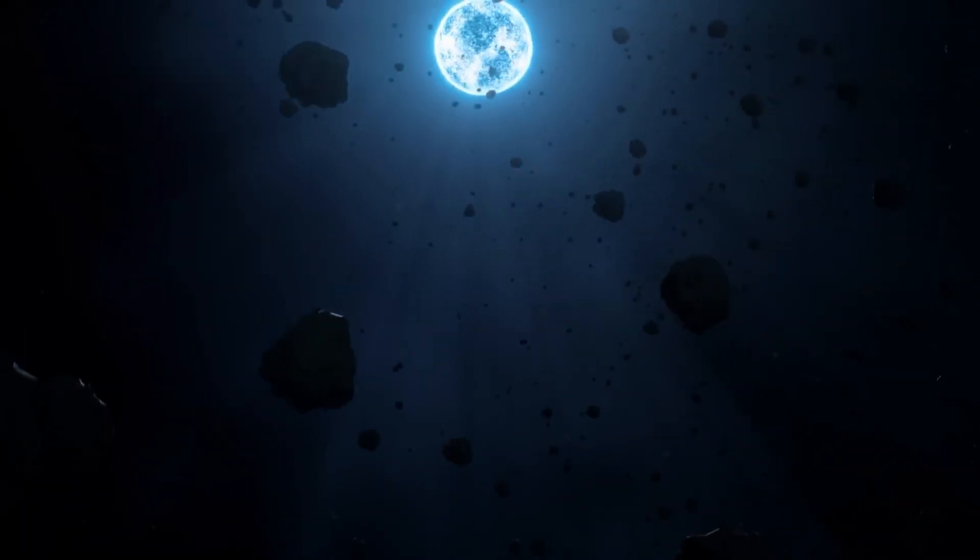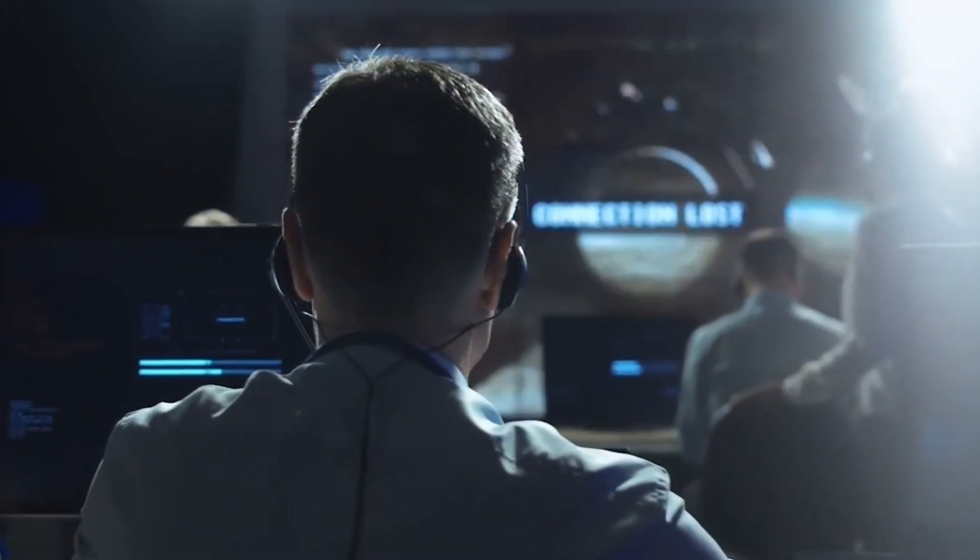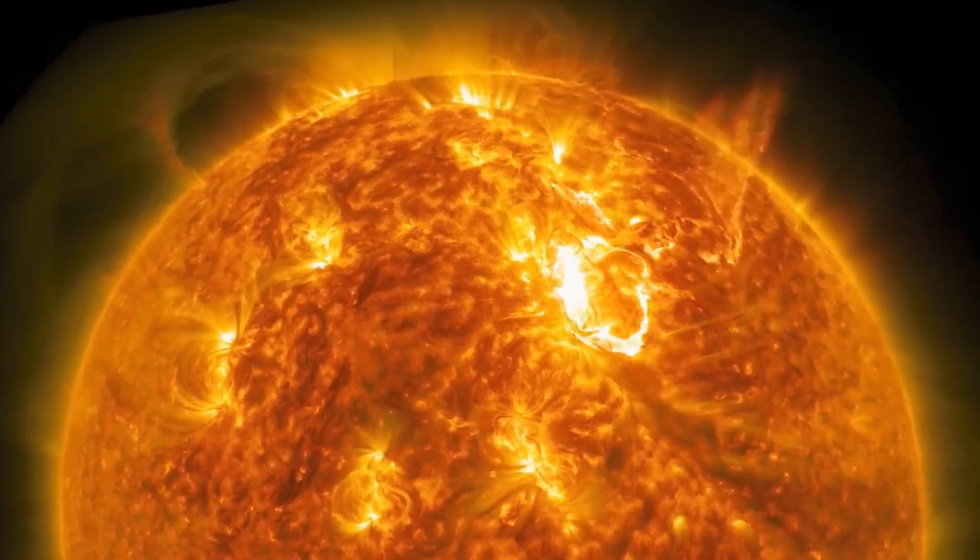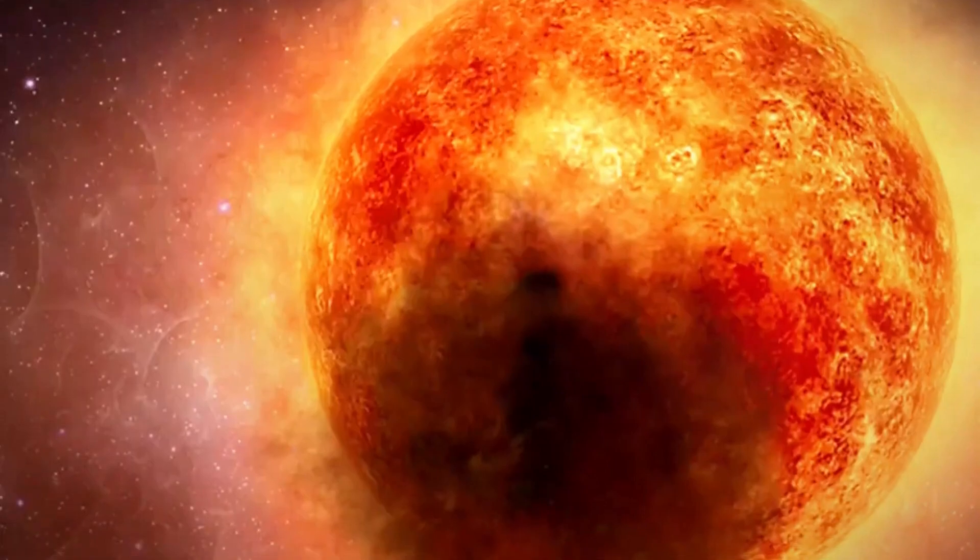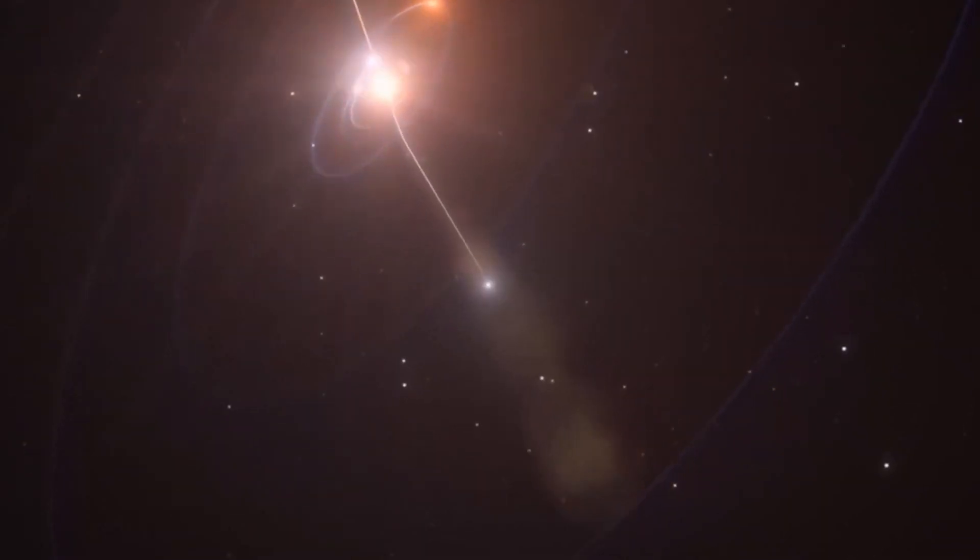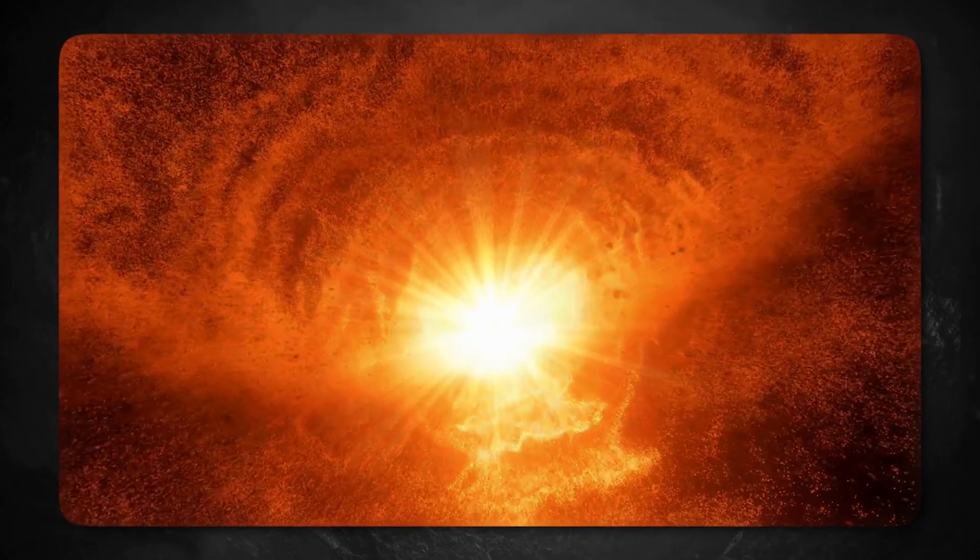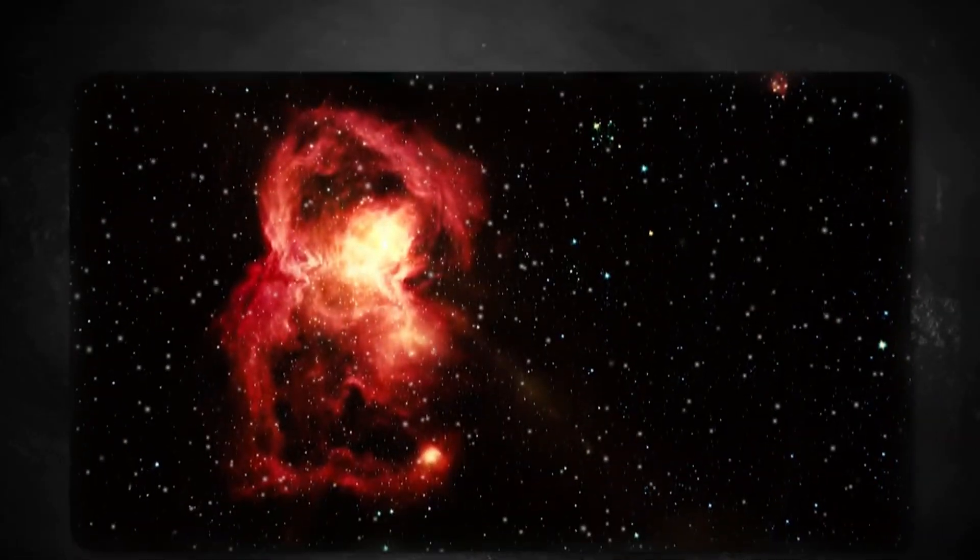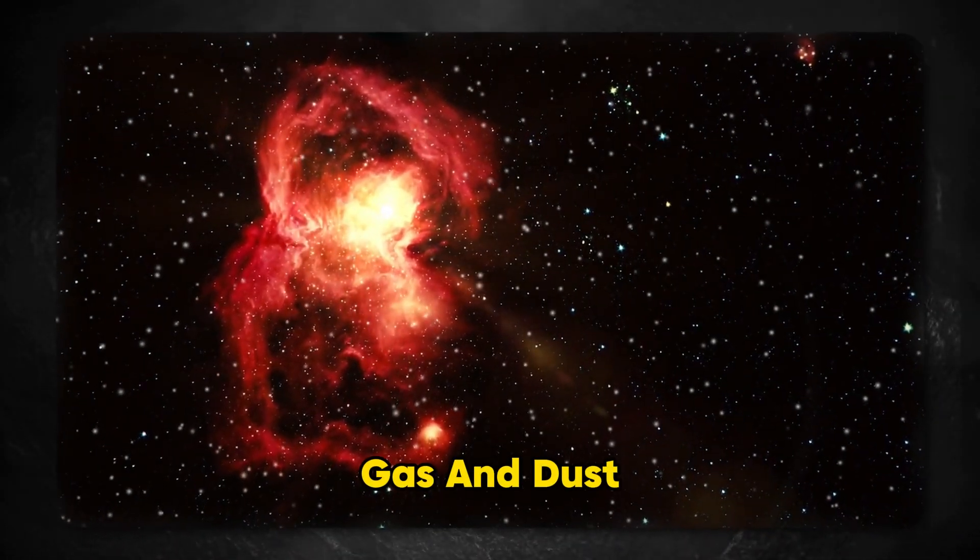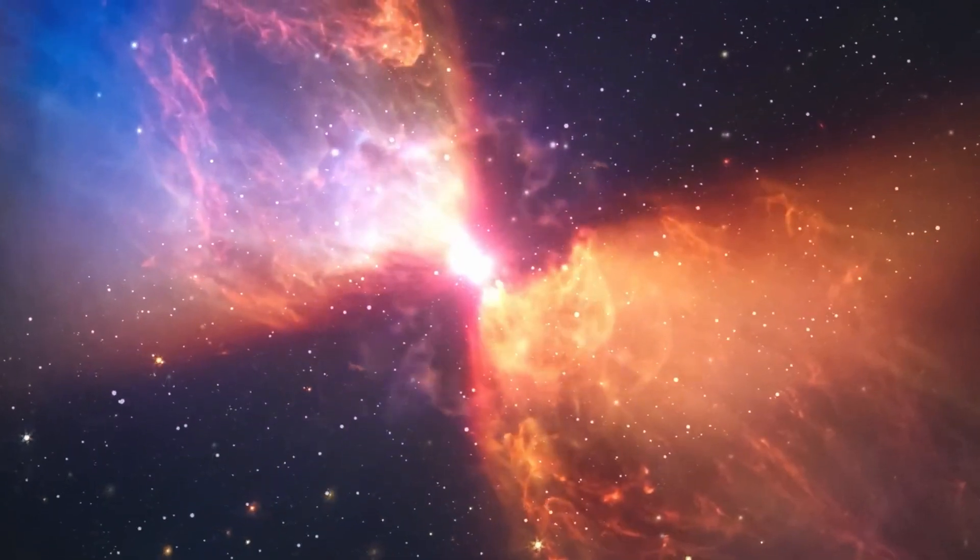Back then, not much was known about this star, but now that more advanced telescopes have been made, scientists can look at Betelgeuse in great detail. By studying the light Betelgeuse gives off, scientists have learned a lot about it, such as its size, makeup, and temperature. The Hubble Space Telescope has even taken clear pictures of Betelgeuse's surface, which show complex patterns of gas and dust. Scientists can use these pictures to make models of the star's behavior and guess how it will change in the future.